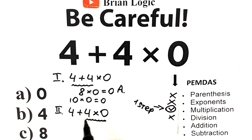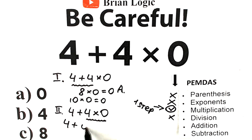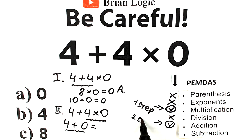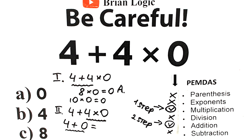Let's do this: we apply this multiplication only to these two values, so we have 4 plus 4 times 0, which equals 4 plus 0. Then let's go to the last step — we have a very simple addition. We solve this addition, and the correct answer right here is 4.